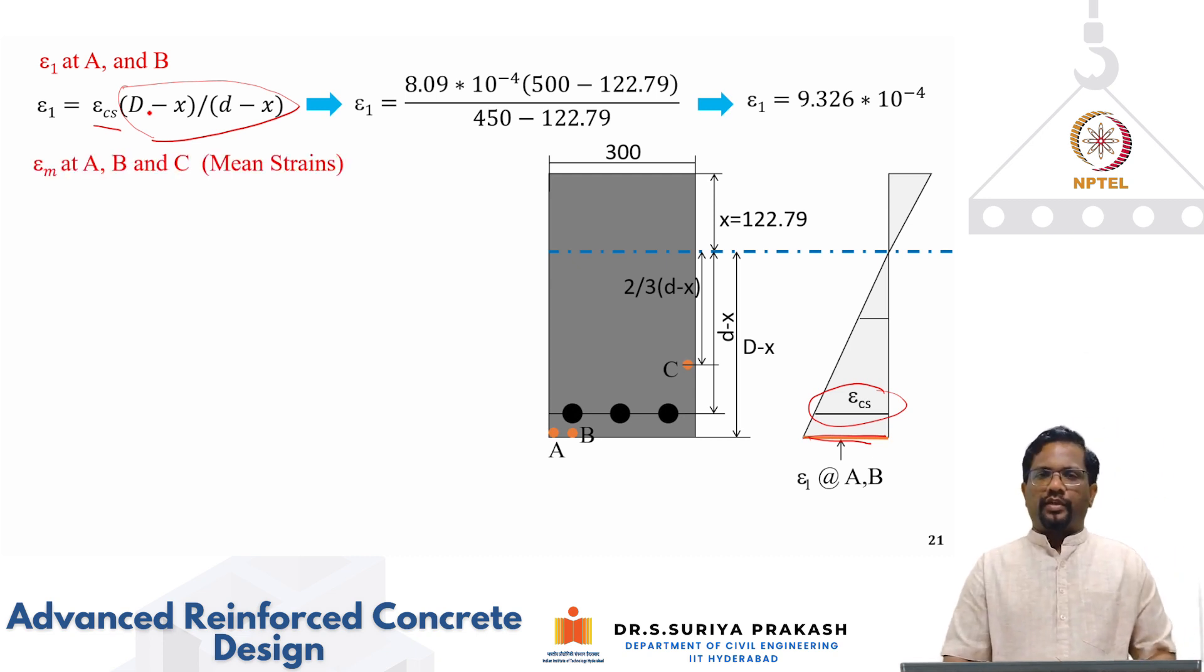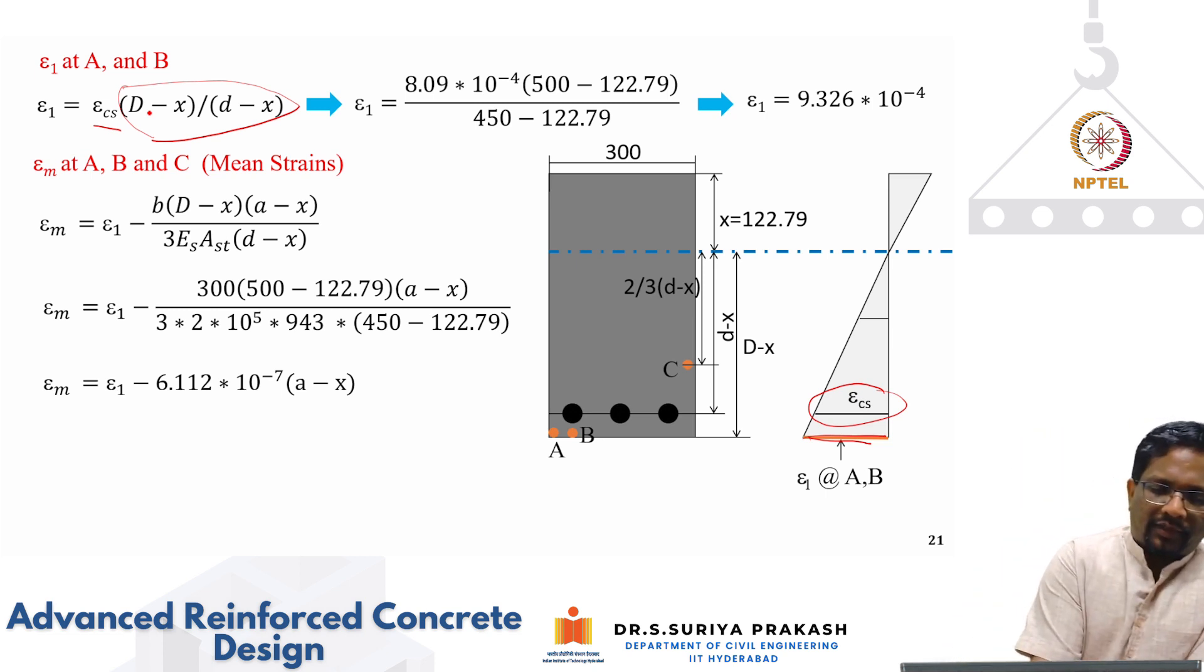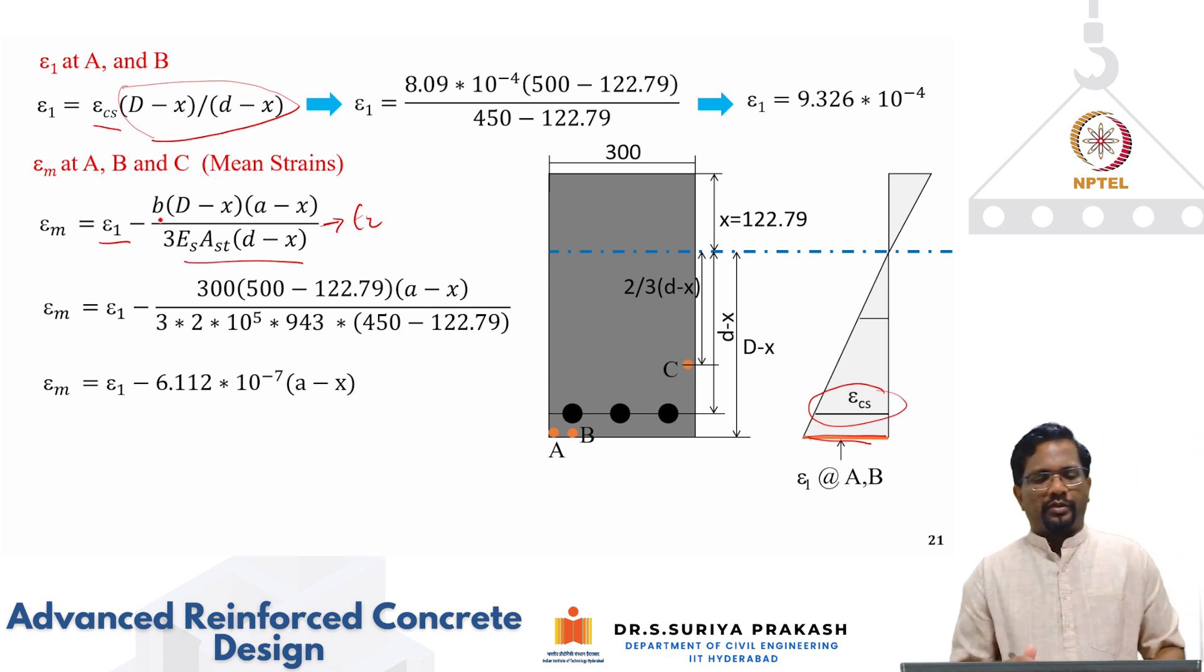What is that we are interested in? We are not interested in cracked section epsilon 1. We are interested in mean tensile strain, which is epsilon 1 minus epsilon 2. Let us calculate what are the mean strains. This is epsilon 1, which we have already got and this is your epsilon 2. That we derive this expression assuming FCT S is 0.67, if you remember. That is how you got this one third megapascal.